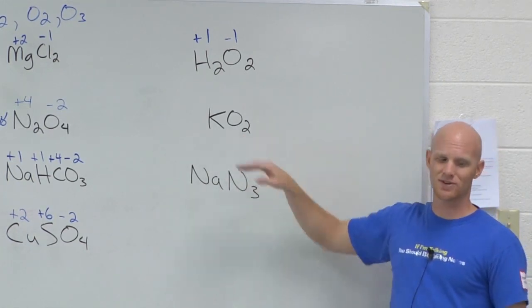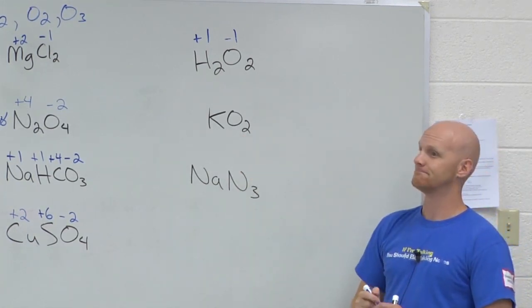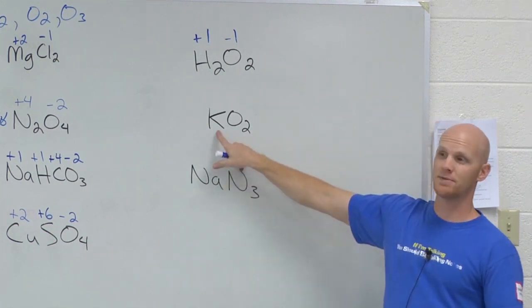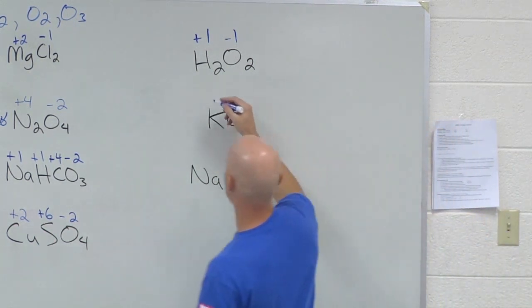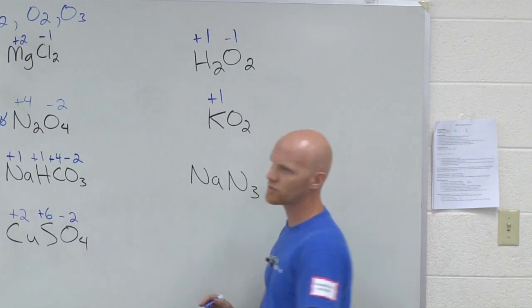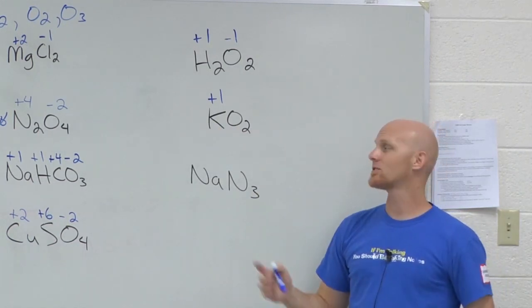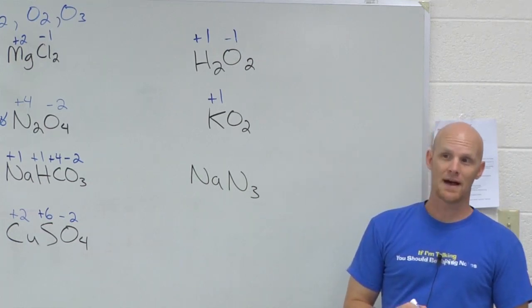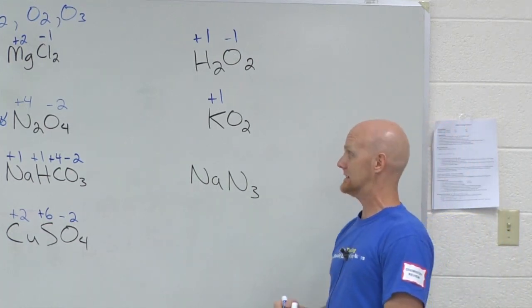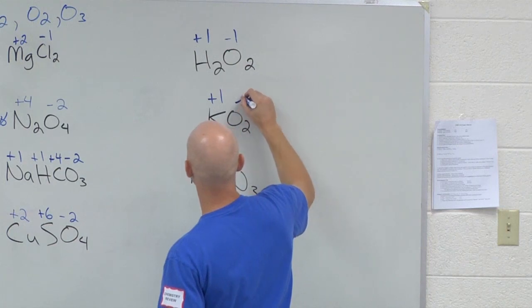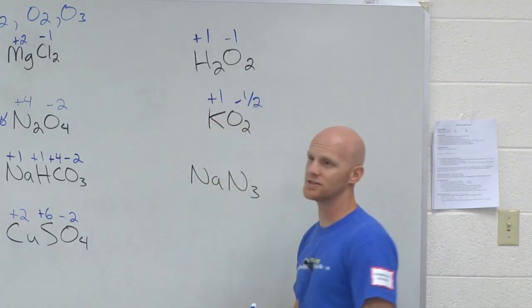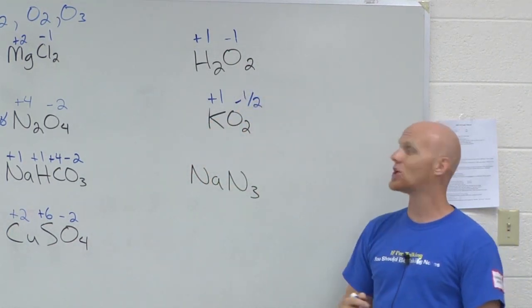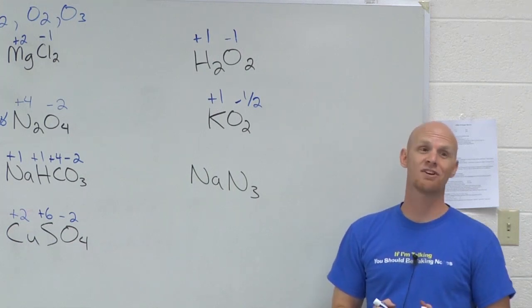So K2O2, who do you assign first? Got a group one metal. And potassium as a group one metal is plus one. And so then you go to oxygen. He's the last element left. And so he's just going to have to what? Balance it out. Good. This isn't very common, but it's a fraction. It's negative one half. This is called a superoxide, and they're super.